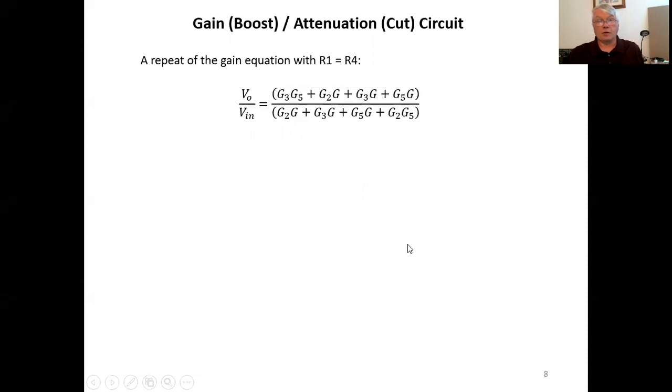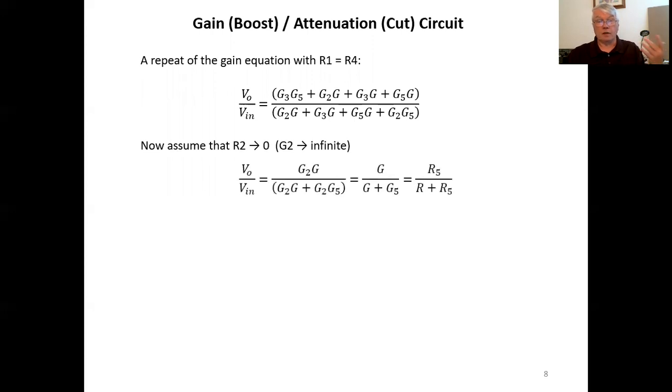Let's repeat the gain equation here. Again, making the assumption that r one and r four are the same. Now let's assume that r two goes to zero, which makes g two infinite. And let's take the limit of this gain expression as g two goes to infinity. And we get this, and it becomes simply r five over r plus r five. Now that has to be less than one.